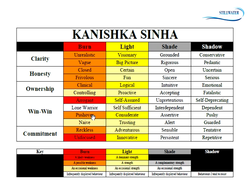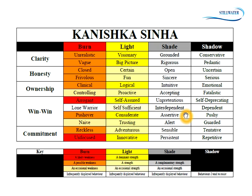But if I develop the strength of assertiveness — being willing to say no or stand up for my point of view — I'm less likely to be a pushover. The darker the cell in the shade column, the less likely the corresponding burn is to appear. Dark gray cells mean I've already developed those strengths. For me, I have a lot of occasional strengths. For example, I've slightly developed assertiveness, so sometimes I stand up for myself but not always — and so sometimes I'm a pushover, but not all the time.